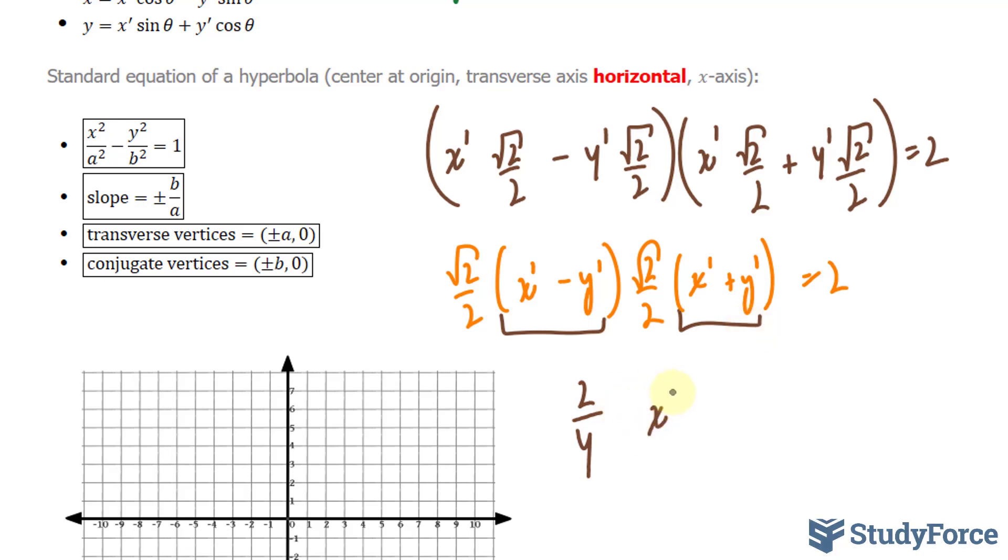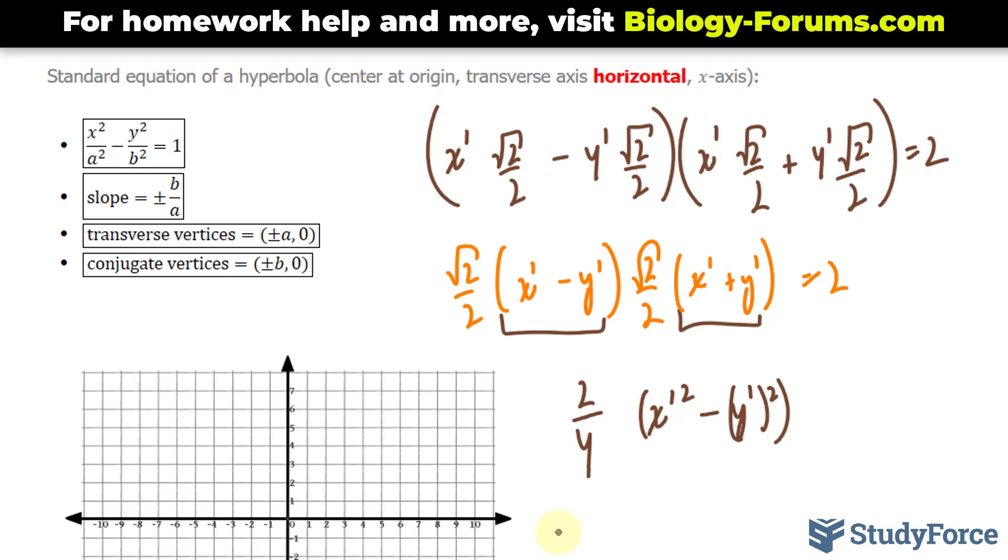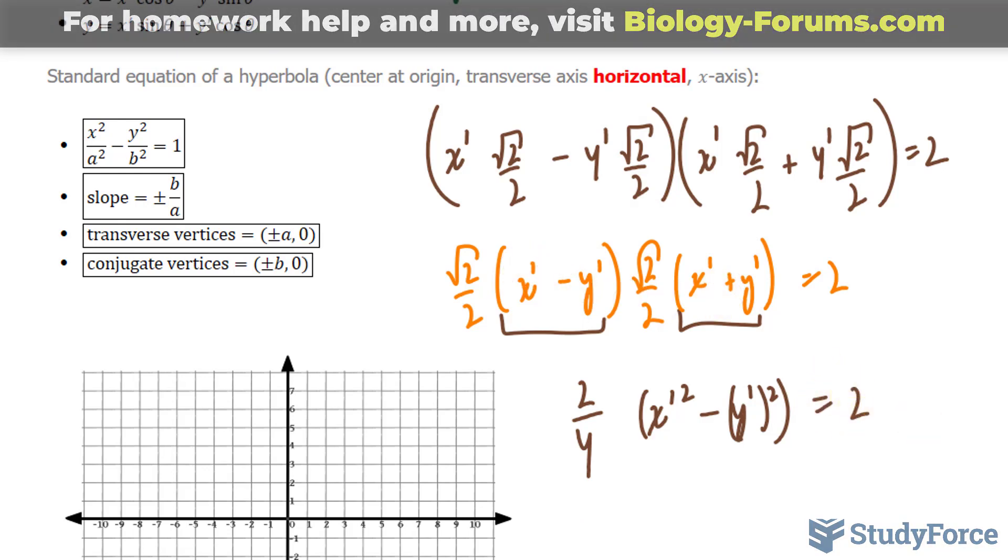Think about it this way. If we had x'² - y'², this expression is a difference of squares. And if you factor it via difference of squares, you should end up with these two factors. All of this is equal to 2.